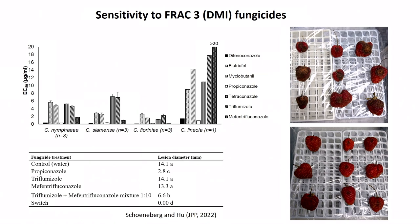We confirmed this with detached fruit assays, selecting propiconazole as potentially effective against anthracnose along with a few others. We also included Switch. Switch was the best — no lesion developed on berries treated with Switch — followed by propiconazole, indicating that propiconazole does seem to have some efficacy for anthracnose and could be used in your spray program.